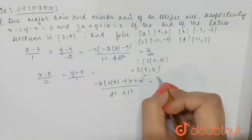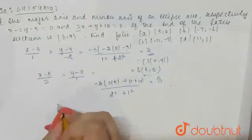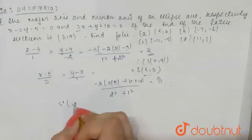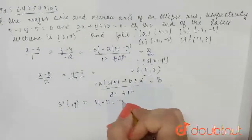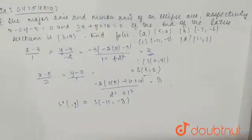So, we can say that the value of S dash, so this will be minus 11 comma minus 8, right? Thank you.